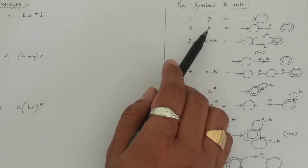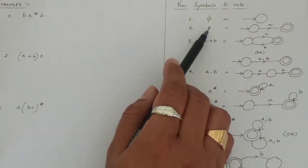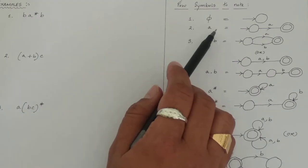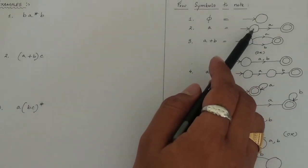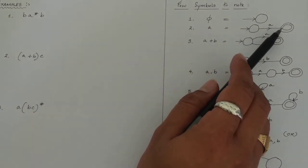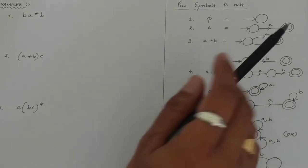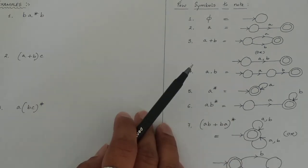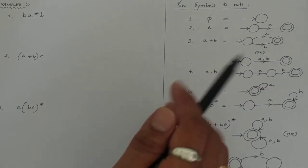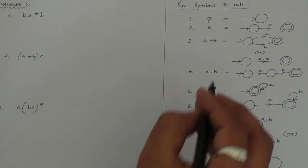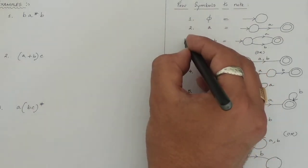If we have a single element, say 'a', we will have a single transition from an initial state to a final state. It is as simple as that.